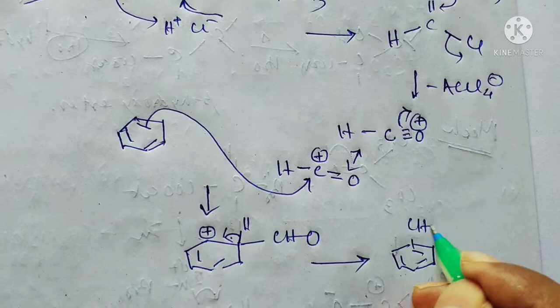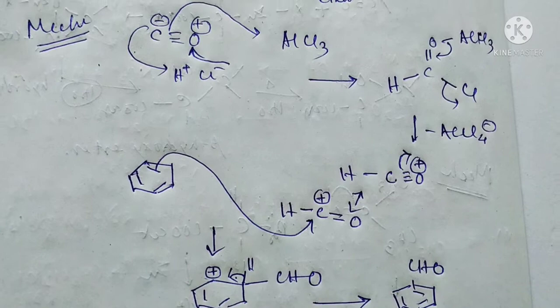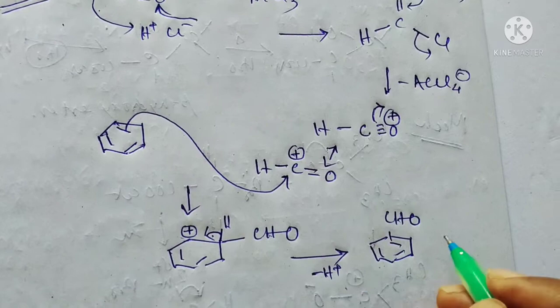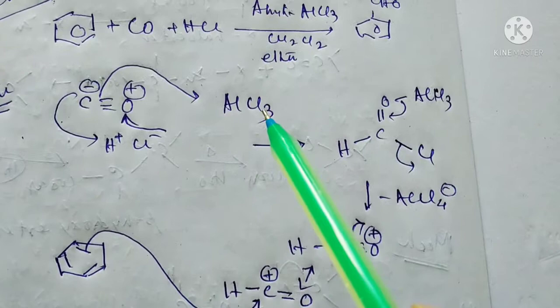So this is actually the basic system how this mechanism actually occurs. From here the Cl minus will remove and this H plus that was already removed, they will form the HCl again. Now here actually the aluminum chloride, the trace amount of CuCl2, are acting as the catalyst.